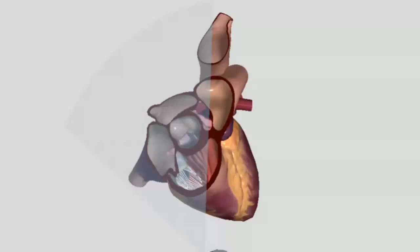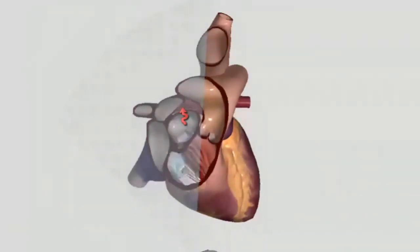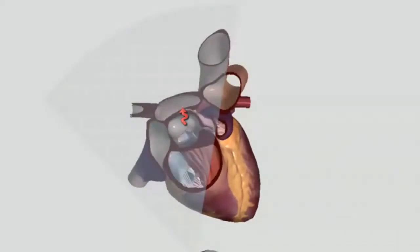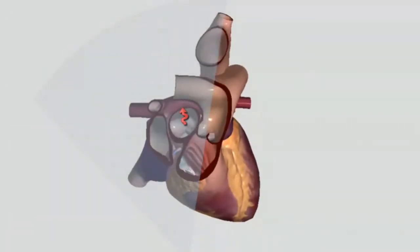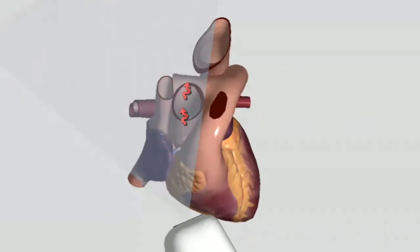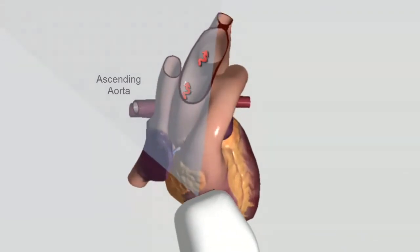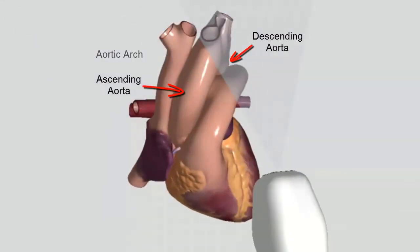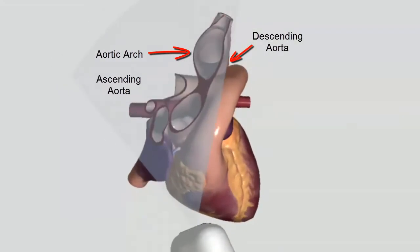We'll watch as the aortic outflow will go up. And it's going to go through the ascending aorta over the aortic arch past three arteries. And then back down through the descending aorta to the rest of the body.